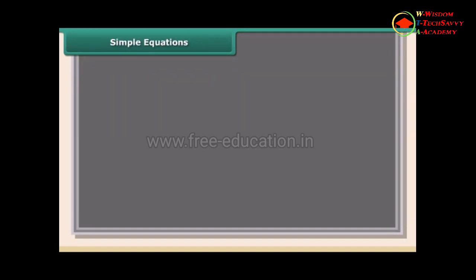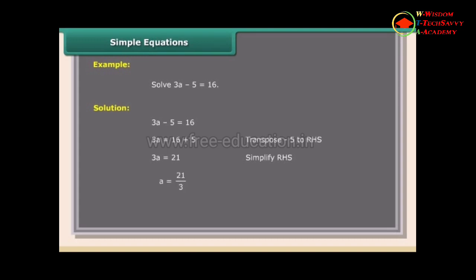Simple equations example: Solve 3a - 5 = 16. Solution: 3a - 5 = 16. Transposing -5 to RHS: 3a = 16 + 5 = 21. Transposing 3 to RHS: a = 21/3 = 7.